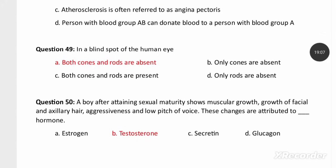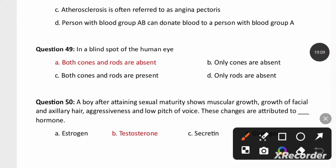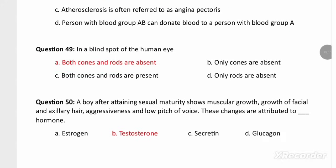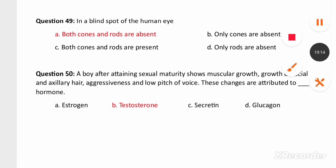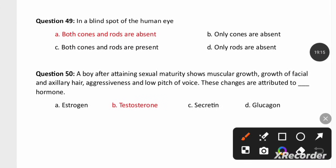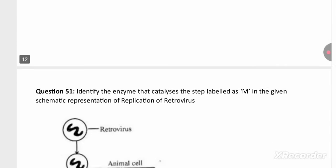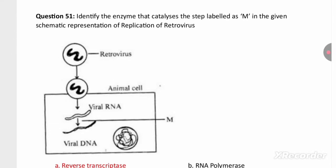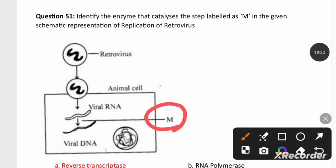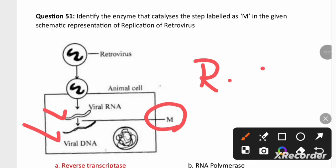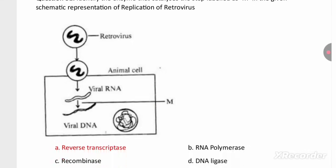In the blind spot of the human eye, both rods and cones are absent. A boy after reaching sexual maturity shows muscular growth, growth of facial and axillary hair, aggression, and low pitch of voice — these changes are attributed to the sex hormone testosterone. The enzyme M that converts viral RNA into viral DNA is reverse transcriptase.